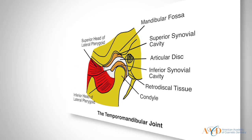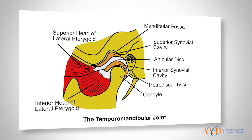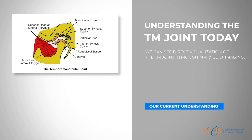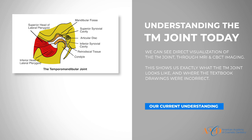As dentists, many times it's a difficult discussion. And really, the reason it's a difficult discussion is because we never really understood the anatomy of the temporomandibular joint, because most of our anatomy was an indirect visualization that we learned from textbook drawings. Those drawings were generated by artists based upon what dentists thought the TMJ looked like. Today, we can see direct visualization of the TM joint through MRI and CBCT imaging, and when we start to use that imaging, we start to realize that in reality, the anatomy doesn't look anything like it does in the textbook.